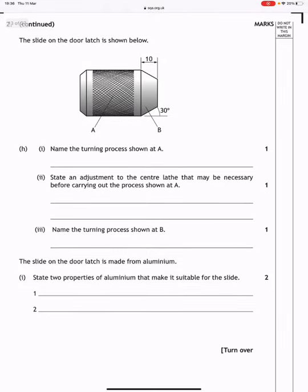The slide on the door latch is made from aluminium. State two properties of aluminium that make it suitable for the slide. Well, first property would be that aluminium is an attractive metal, and another property might be the fact that it doesn't rust and it's got good resistance to corrosion.